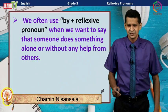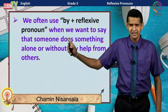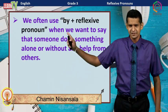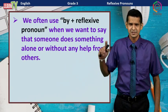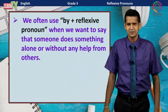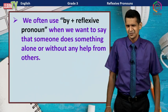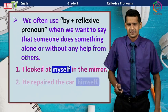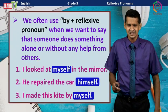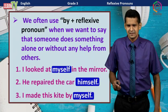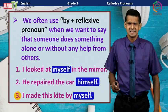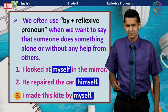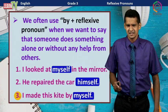This is the third use of reflexive pronouns: by plus reflexive pronoun. We often use 'by plus reflexive pronoun' when we want to say that someone does something alone or without any help from others. For example: I made this kite by myself.